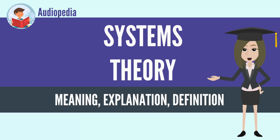Active systems are activity structures or components that interact in behaviours and processes. Passive systems are structures and components that are being processed. For example, a program is passive when it is a disk file and active when it runs in memory. The field is related to systems thinking and systems engineering.